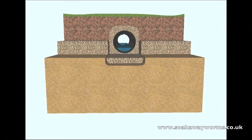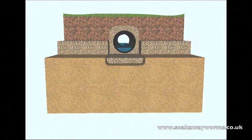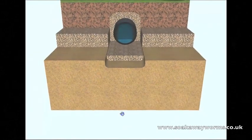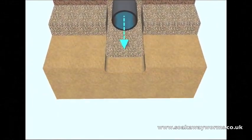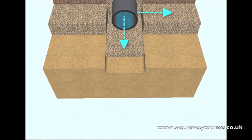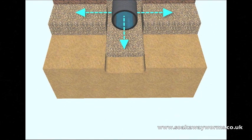Most modern soakaways which use perforated land drainage also use a shingle bed and covering with a membrane. This allows the sewage effluent to naturally drain from the pipe into the shingle and then into the soil.